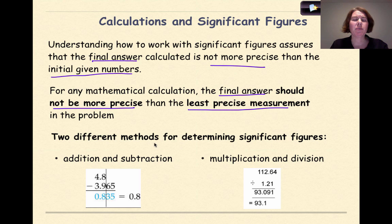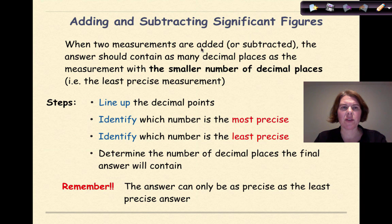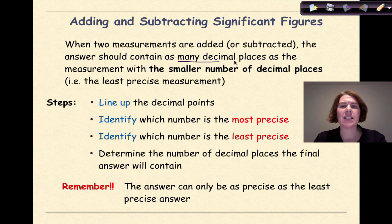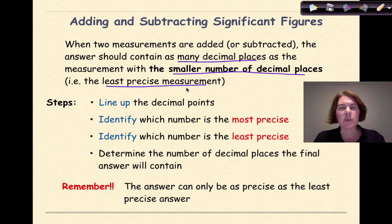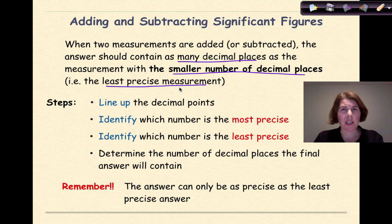In general, there are two different methods for determining significant figures. We're going to look at how to add and subtract significant figures, and then we're going to look at how to multiply and divide significant figures. When adding and subtracting, the answer should contain as many decimal places as the measurement with the smaller number of decimal places — in other words, your least precise measurement. This technique applies just to adding and subtracting significant figures.